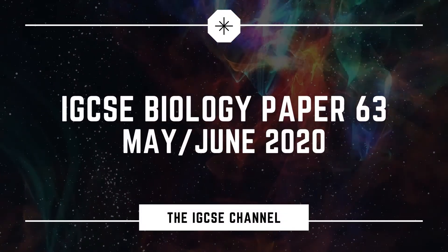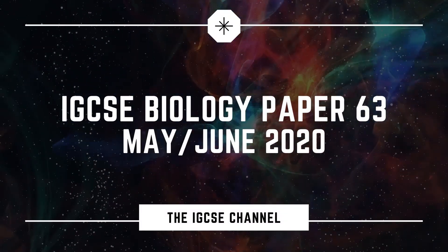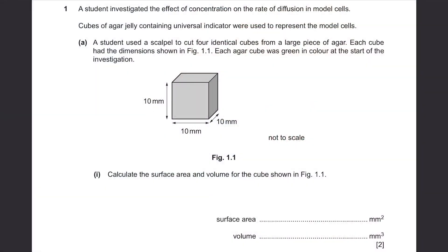Cambridge IGCSE Biology Made in 2020 Paper 63. I'm sure all of you who have watched this video will do better in Paper 6, so let's get started. Question 1.